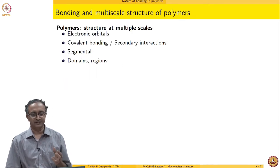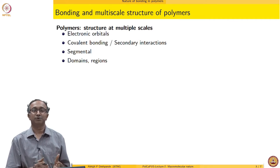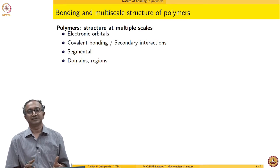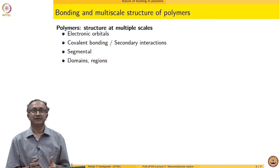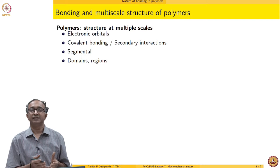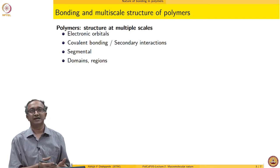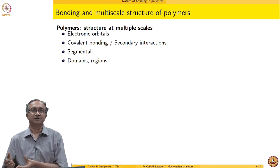Let us begin by first thinking about the macromolecule material. In terms of its behavior, in terms of its response, it is a material which has multiple scales. Generally, when we think of a material which is metallic or ceramic, then we have multiple scales there also — in terms of atomic scale, then a crystal grain scale, and then a bulk scale.